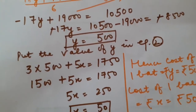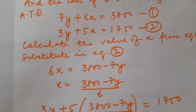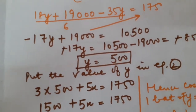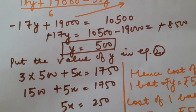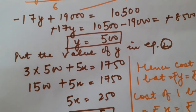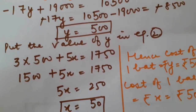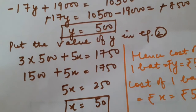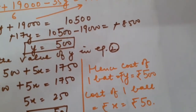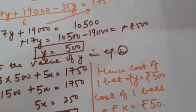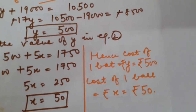Now putting the value of Y in equation 2: 3Y plus 5X equals Rs. 1,750. So 3 times 500 plus 5X equals 1,750, giving 1,500 plus 5X equals 1,750. Therefore 5X equals 250, so X equals Rs. 50. Hence the cost of 1 bat is Rs. 500 and the cost of 1 ball is Rs. 50.